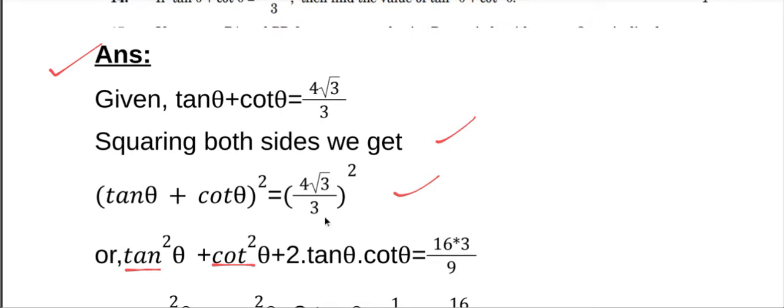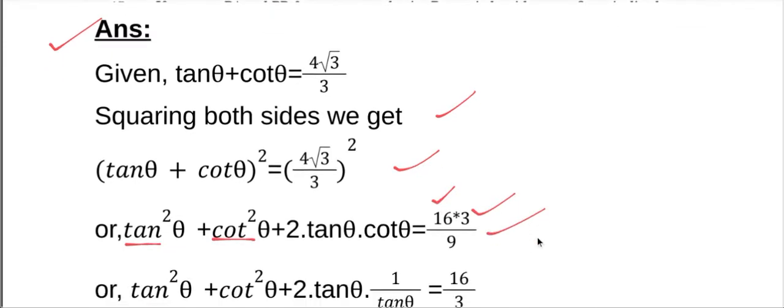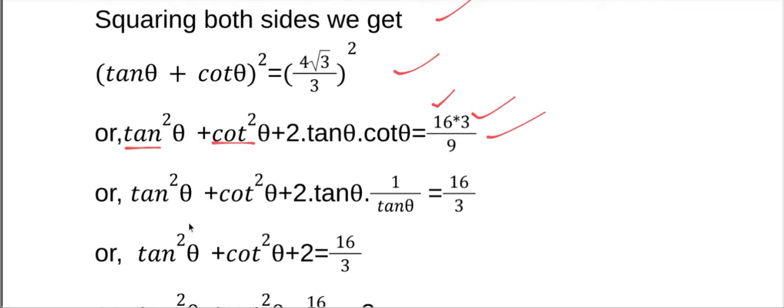Computing the right-hand side: 4² is 16, √3² is 3, and 3² is 9, so (4√3/3)² equals 16·3 divided by 9, which simplifies to 48/9 equals 16/3.